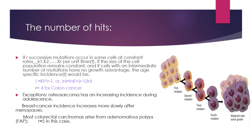If multiple factors including genes and mutations occur and transform a normal cell into a cancerous cell, it is called multi-hit cancer formation. Now if r successive mutations occur in some cells at constant rates k1, k2 to kr per unit time, and if the size of the cell population remains constant, and if the cell with an intermediate number of mutations has no growth advantage, then the age-specific incidence I equals k·t^(r-1), or putting ln on both sides: ln I = ln k + (r-1)·ln t.